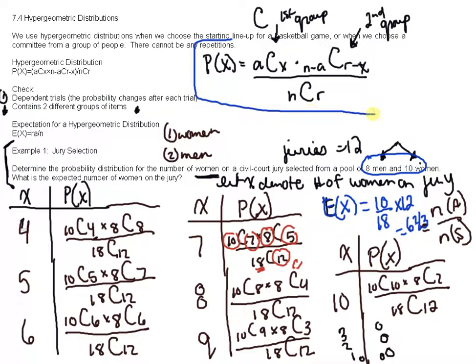And again, this formula, you don't have to actually formally use, just know that this is the first group. This is the second group. So we have a, and we have n minus a, because a plus n minus a will equal the n, and x plus r minus x is going to equal the r.